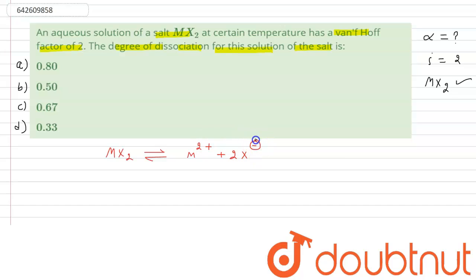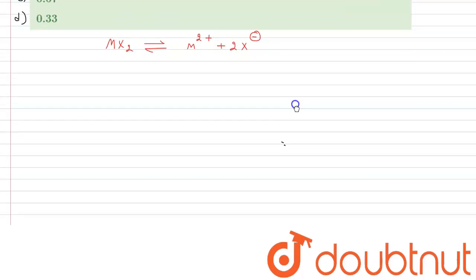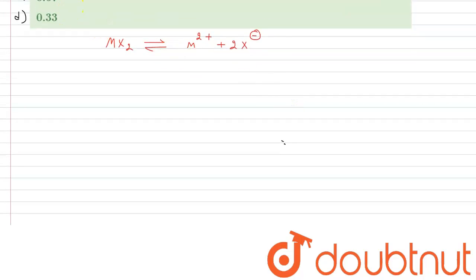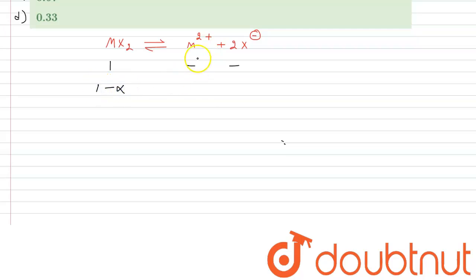Initially, MX₂ has 1 mole, and the products have no moles. After some time, alpha moles dissociate, so MX₂ becomes (1 − α). Meanwhile, M²⁺ gives α moles and X⁻ gives 2α moles.